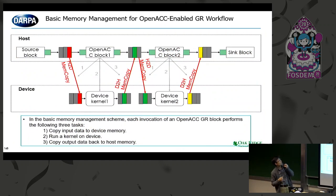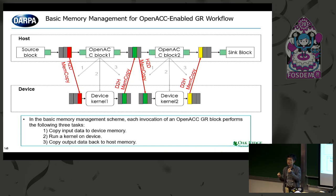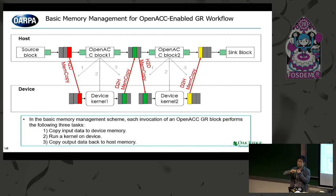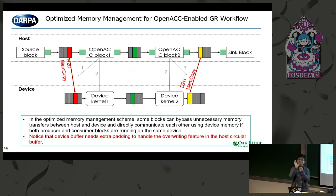This shows the basic memory management scheme for the OpenACC-enabled GR workflow. OpenACC offloads computation to a device — which can be a CPU, GPU, FPGA, or whatever. When OpenACC block one is invoked, it first copies data from the host to the device, launches the kernel, then writes data back to the host. But there are inefficiencies: if OpenACC block one and block two both run on the same device, there's unnecessary data transfer between host and GPU between them. So if we know that both producer and consumer blocks run on the same device, we can reduce unnecessary memory transfers.